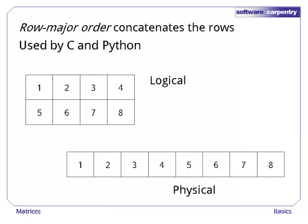One possibility is row major order, which concatenates the rows. This is what C uses, and since Python was originally written in C, it uses the same convention.